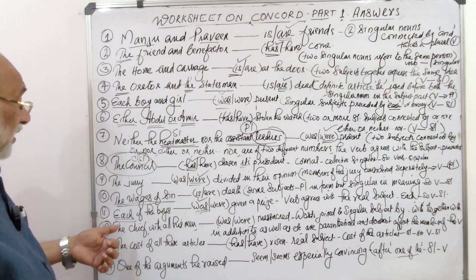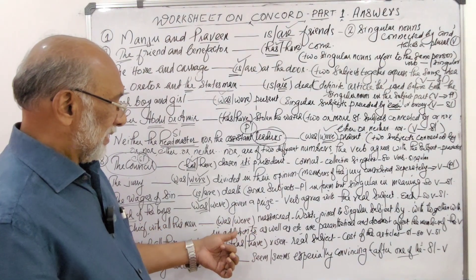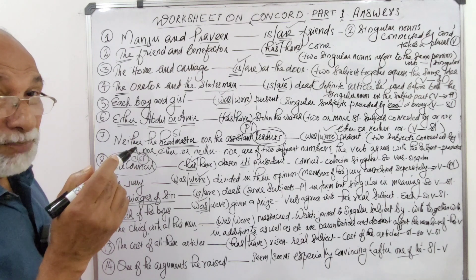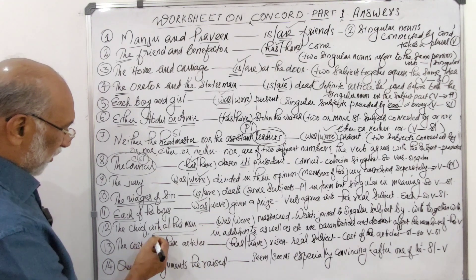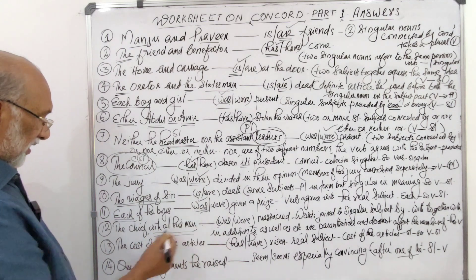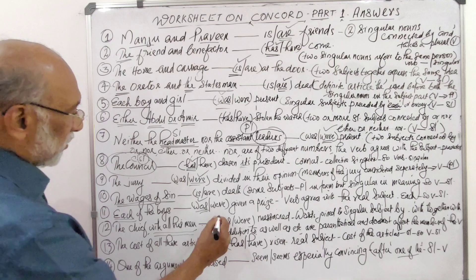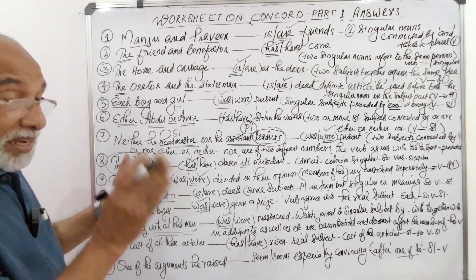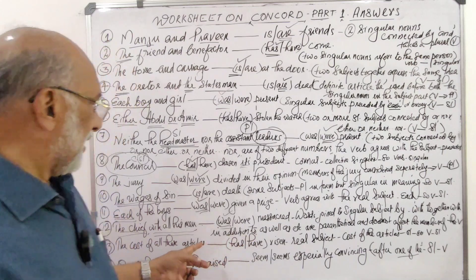Question 12: 'The chief with all his men was/were massacred.' The answer is 'was massacred.' The phrase 'with all his men' is placed between two commas — it is a parenthetical expression and not an integral part of the sentence. The real subject is 'the chief.' So: 'the chief was massacred' — 'with all his men' simply provides additional information.